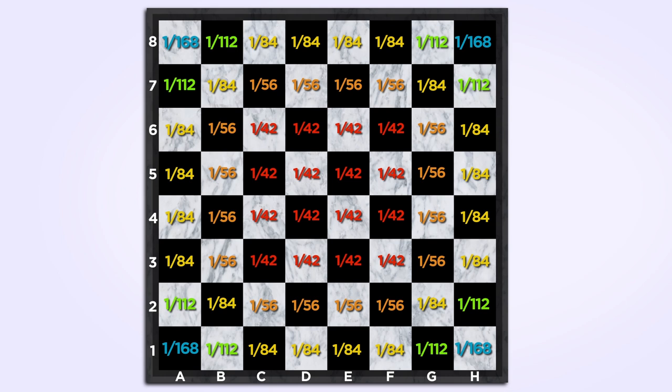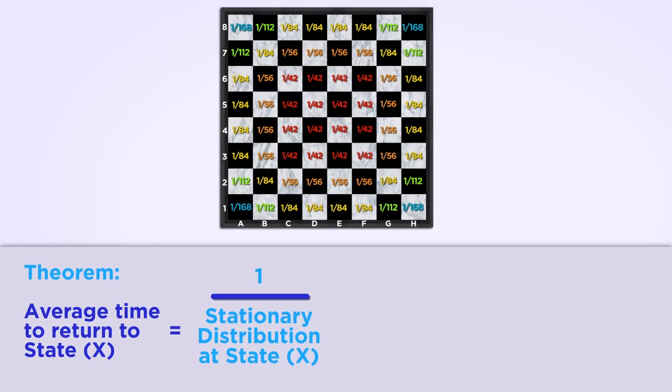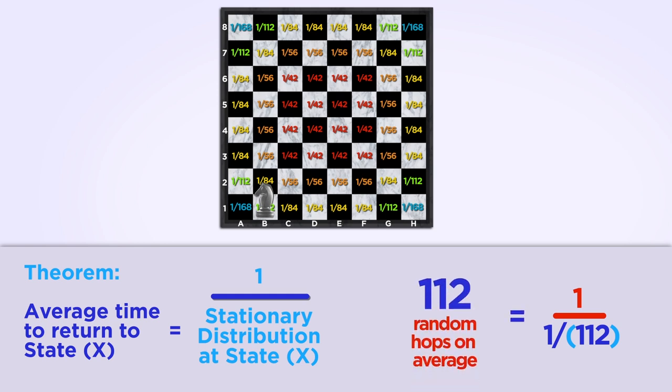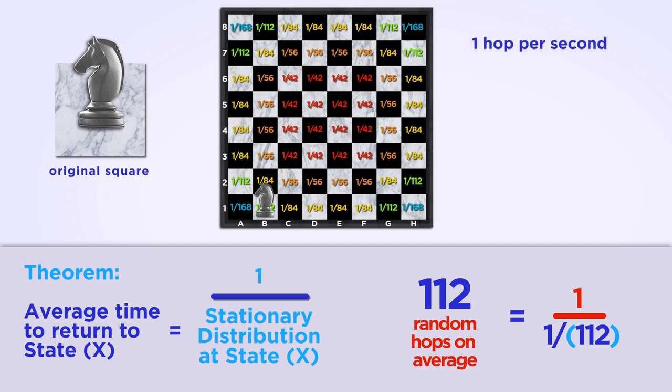Now that we know the stationary distribution, we can apply the theorem from earlier to finally answer our question. How many random hops, on average, will the knight take before returning to its original square? Well, to figure out the stationary distribution at the original square, we divide 3 by 336 to get 1 over 112. Our theorem says that we divide 1 by 1 over 112 to get the expected number of moves before the knight returns. That means it'll take, on average, 112 random hops before the knight returns to its square.